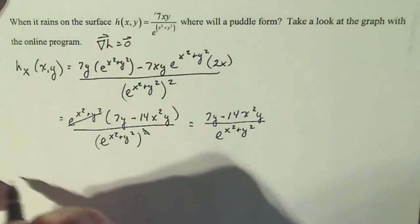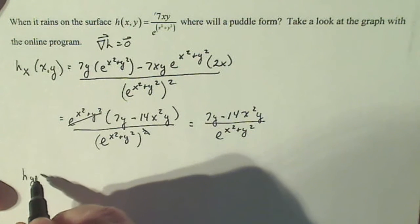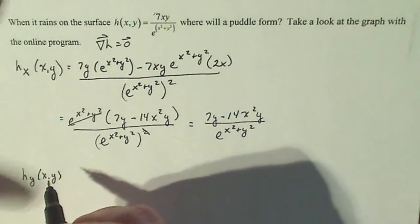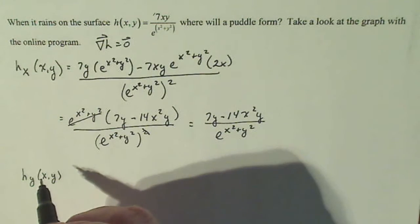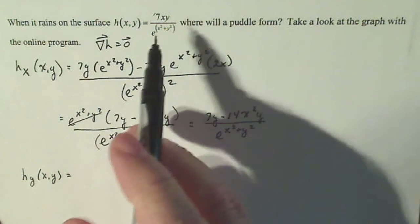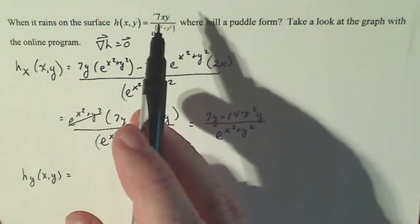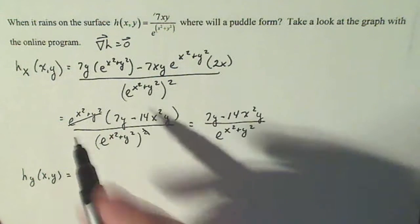Now let's do h sub y, because I'm trying to put together the gradient. I've done these already — just making sure I do them right. Now y is the variable and x is the constant.